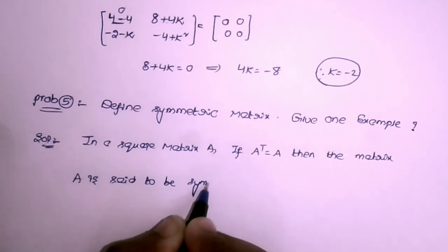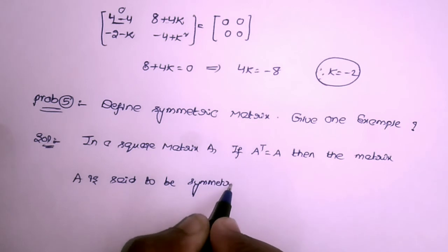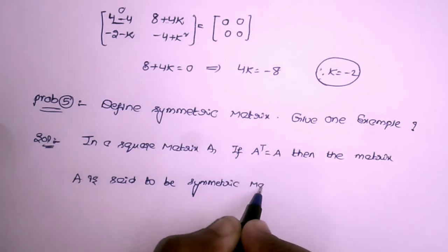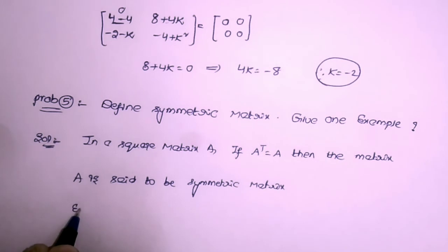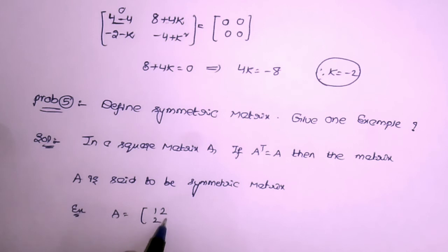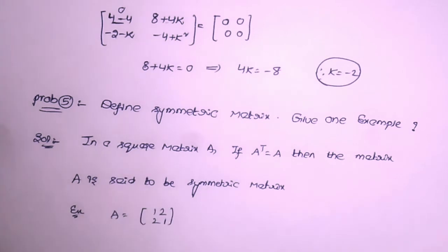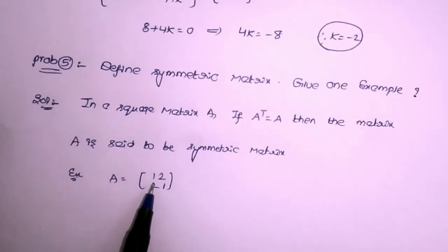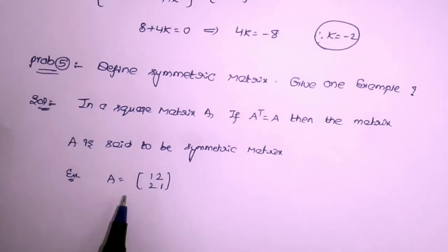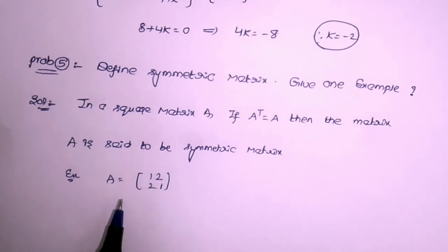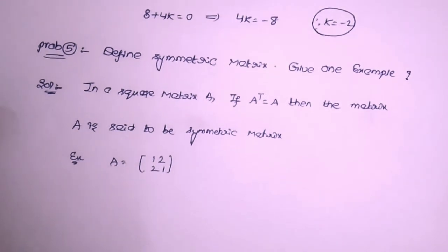Example of a symmetric matrix: A = [[1,2],[2,1]]. If you take the transpose of this matrix, you get the same matrix back — [[1,2],[2,1]] — confirming A' = A. So this is the example of a symmetric matrix.